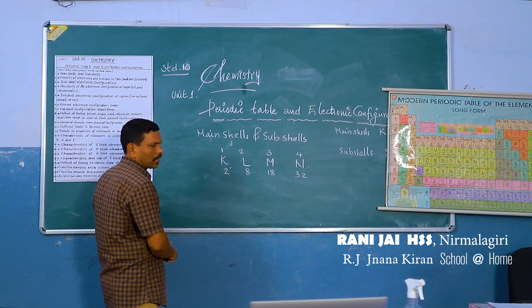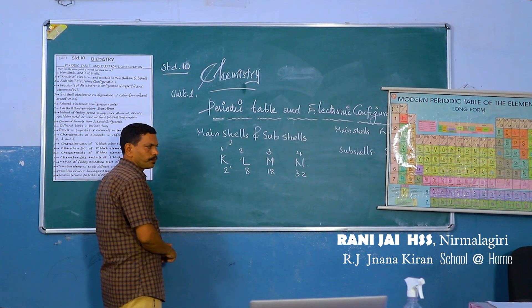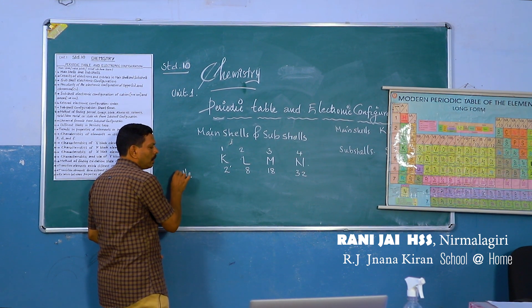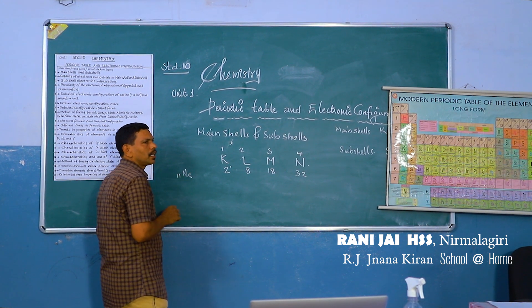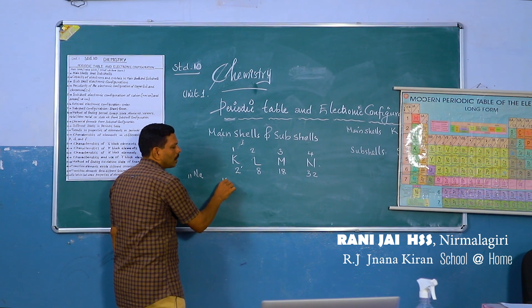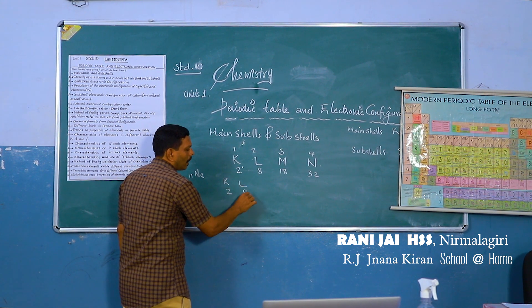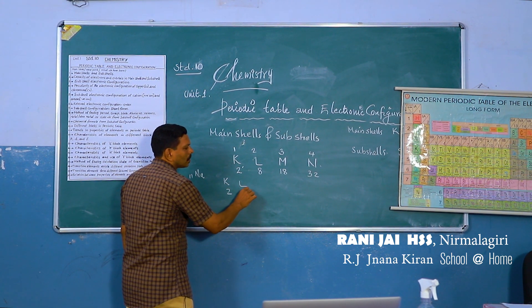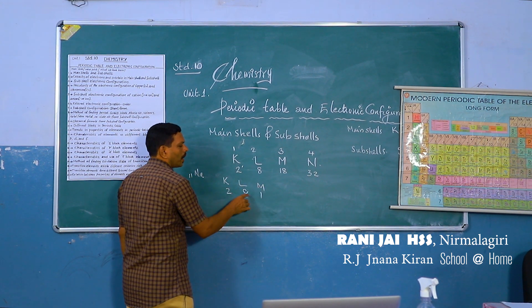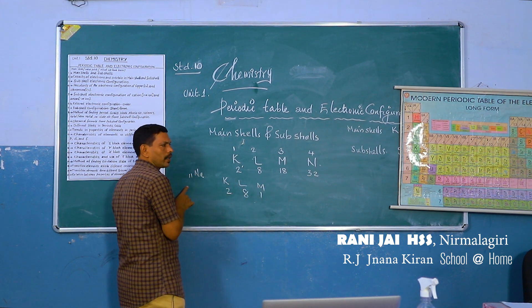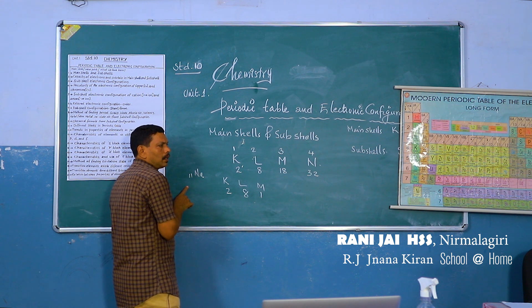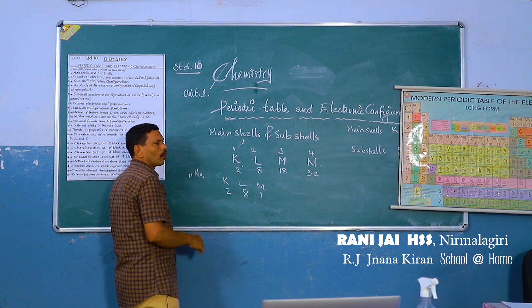We already studied this in previous class. Now, the atomic number of sodium is 11. We write its electronic configuration main-shell-wise as: K=2, L=8, M=1 — that gives us 2+8+1=11. This is the main shell configuration.